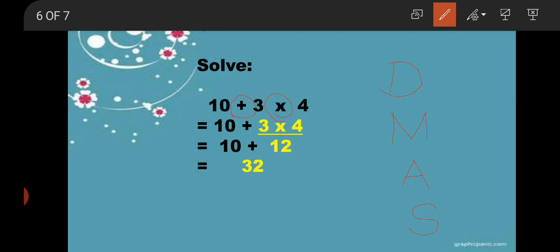Now students, ask from the DMAS. D stands for division. We do not have a division sign here, so we cannot solve division. M stands for multiplication. Yes, we have a multiplication sign, and the multiplication sign is between 3 and 4. So 3 into 4, we will get 12.